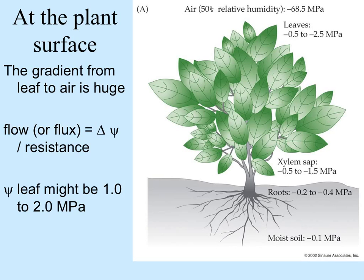Plants have to deal with the differences between the water potential of the air surrounding them, in their tissues, and in their roots and the soil. The gradient from the water potential of the leaf to the surrounding air is great. Flow or flux — the movement of water from plant to air — equals the difference in water potential over resistance. The average water potential of a leaf might be negative 0.5 to negative 2.5 megapascals, whereas air at 50% relative humidity is almost negative 70 megapascals.